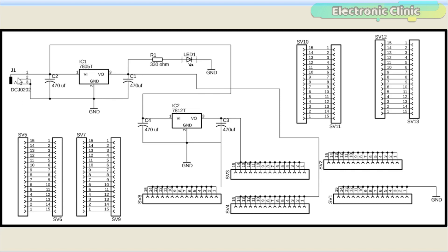J1 is the female power jack and this is where we connect the adapter, battery or a solar panel. This DC female power jack is connected with the input pins of the 7805 and 7812 voltage regulators. 470 microfarad capacitors are connected at the input and output sides of the voltage regulators. A 330 ohm resistor is connected in series with a 2.5 volt LED. This is a current limiting resistor. The LED is used as the indicator that the circuit is powered up.